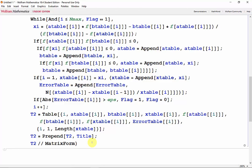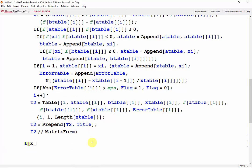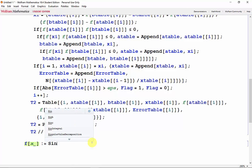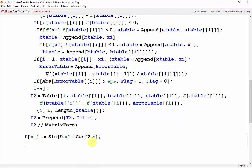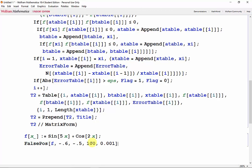Now let's test it with the same function from before, so f(x) is equal to sin(5x) plus cos(2x). And you want the FalsePos of that function starting from -0.6 going to -0.5, with a max number of 100 iterations and a stopping error of 0.001. Shift enter.